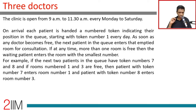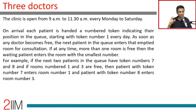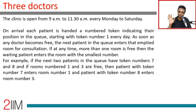For example, if the next two patients in the queue have token numbers 7 and 8, and room numbers 1 and 3 are open, the patient with token 7 will go to room 1 and token 8 will go to room 3. Whenever a door opens, I go. If two doors open at the same time, I go to the smaller room number — the higher priority room. If rooms 1 and 2 open up, I go to 1; if 2 and 3, I go to 2; if 1 and 3, I go to 1.